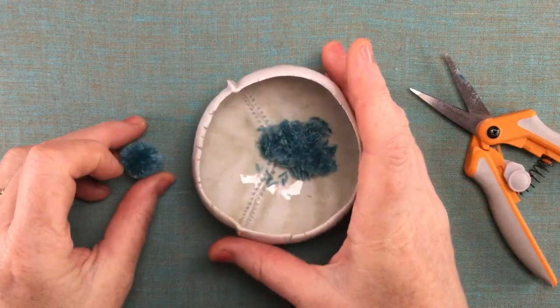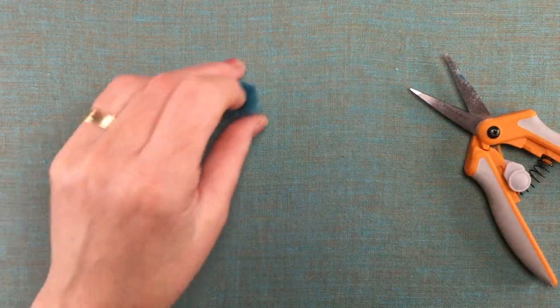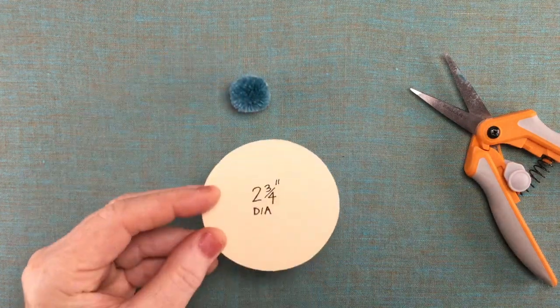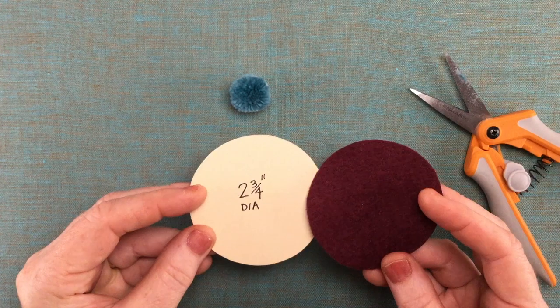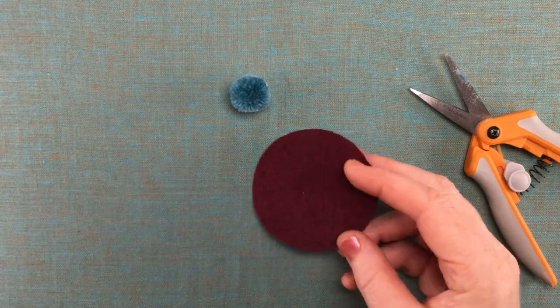So let's set that aside and we can start on the base of the hat, our little beret or our tam-o-shanter.